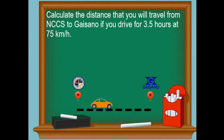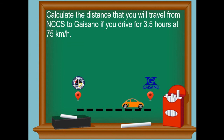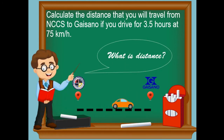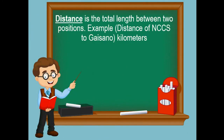Second problem: calculate the distance that you will travel from North City Central School to Gaisano if you drive for 3.5 hours at 75 kilometers per hour. On this problem we are going to find distance. But what is distance? Distance is the total length between two positions. Example: the distance from North City Central School to Gaisano in kilometers.